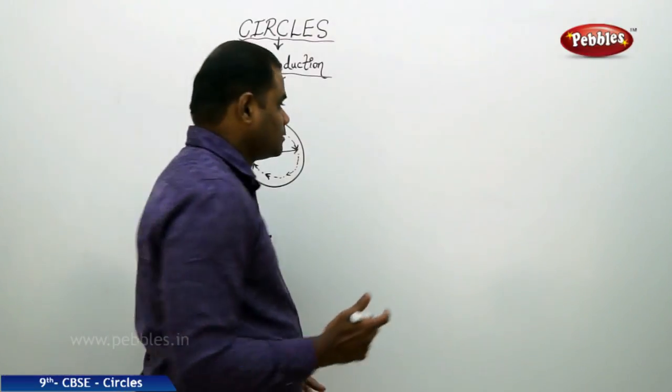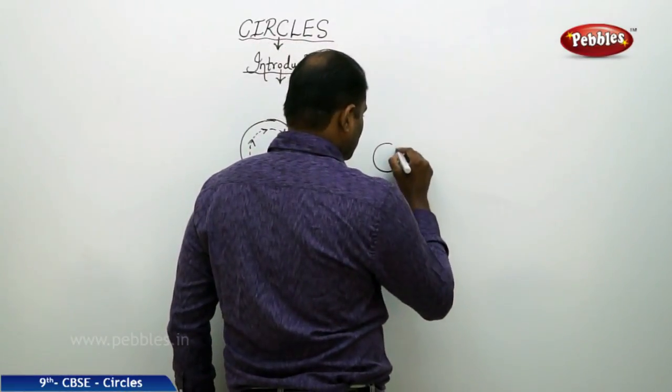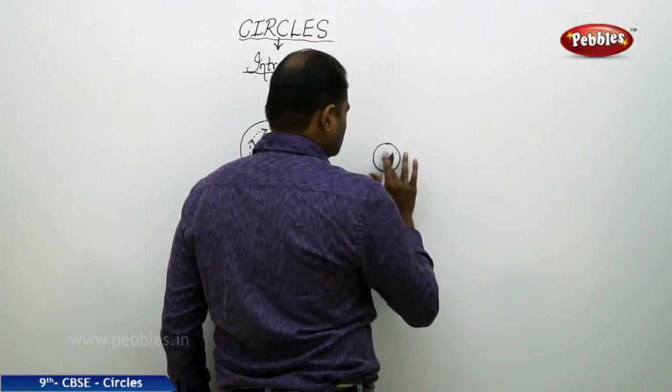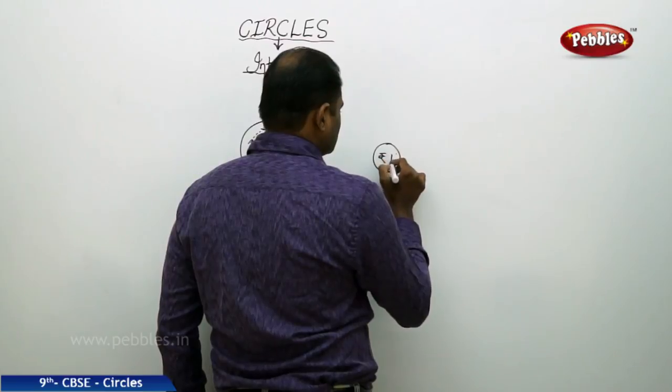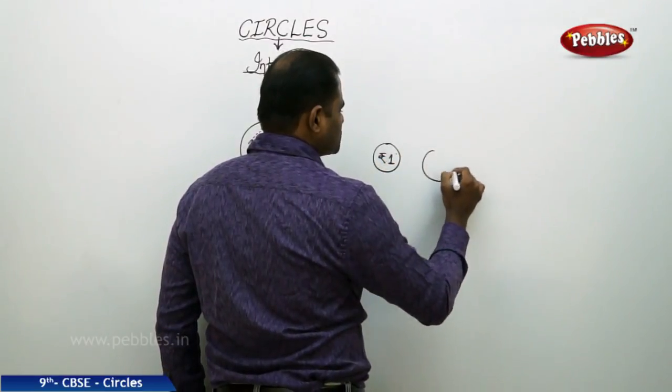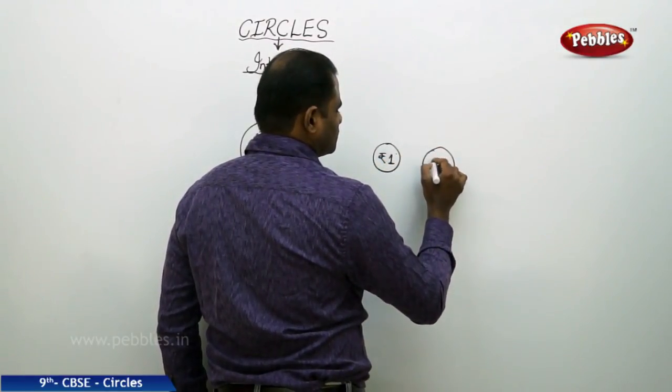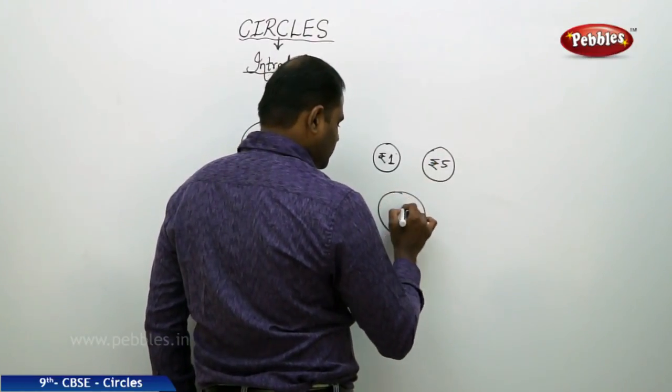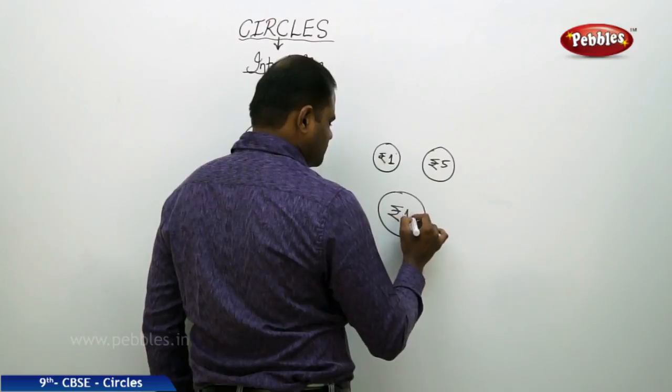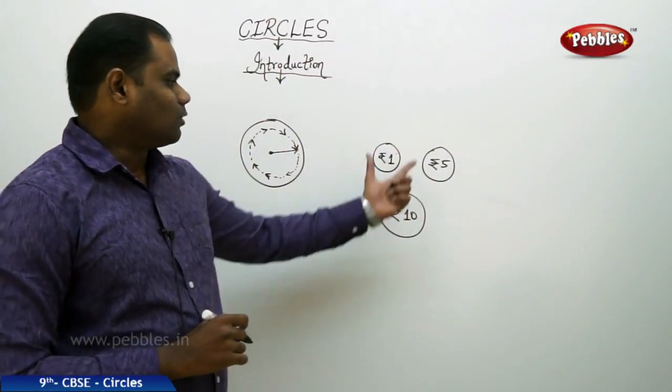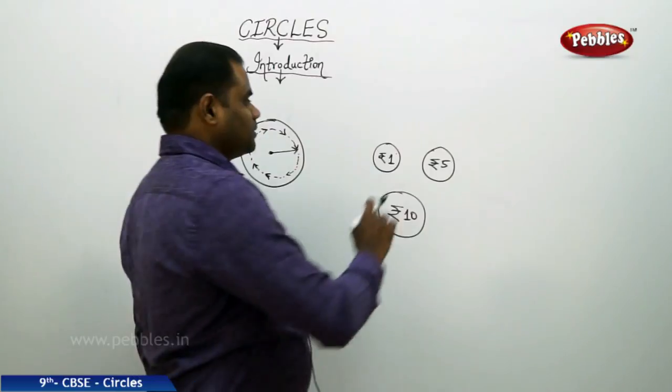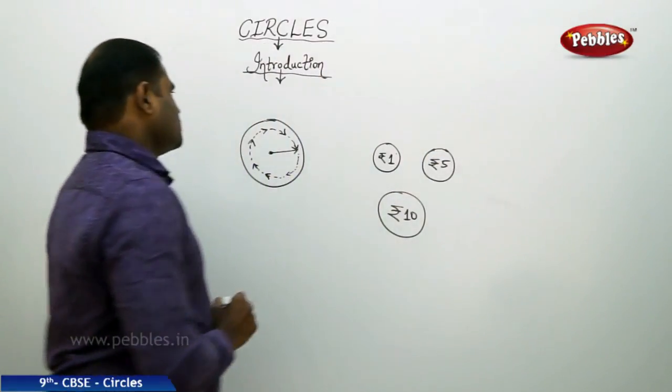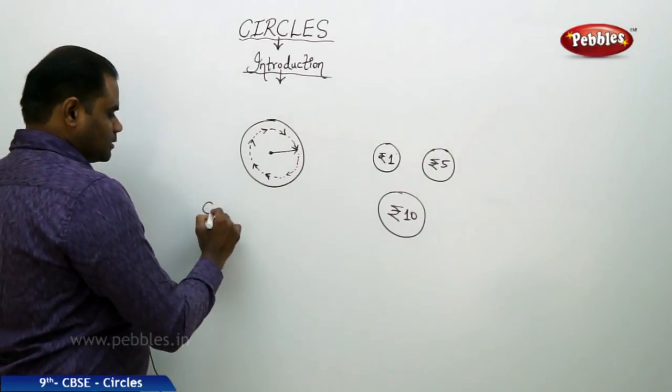The currency coin, a 1 rupee coin, a 5 rupees coin, a 10 rupee coin, etc. are all circular in shape. So they are all circular in shapes.